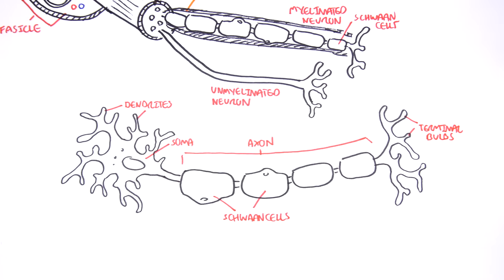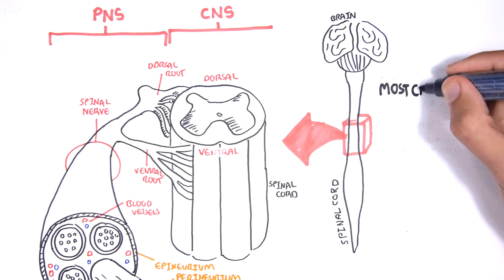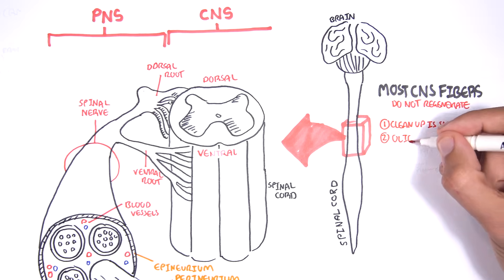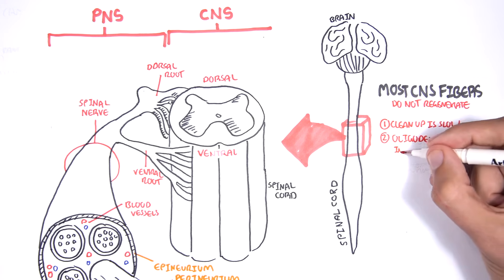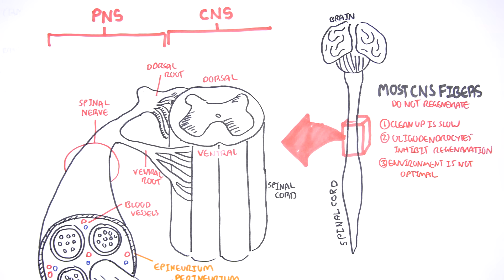Okay, now let's talk about nerve injuries or neuron injuries. Let's start off by looking at the central nervous system, CNS. Most CNS fibers, the neurons, they do not regenerate. And there's three reasons why. Firstly, clean up is slow. Secondly, oligodendrocytes, which are a type of glial cell, inhibit regeneration. And thirdly, the environment is not very optimal.